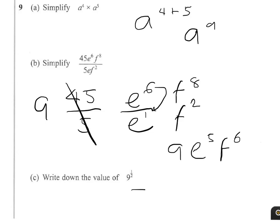Now for 9 to the power 1 half, we've got to know, to get this right, that that's exactly the same as the square root of 9, and so the answer is 3.